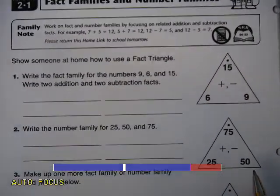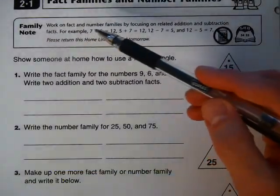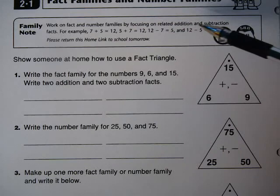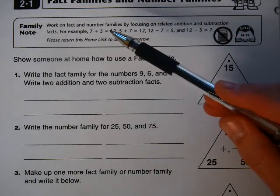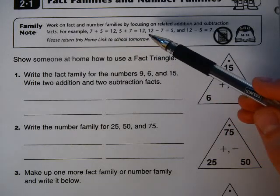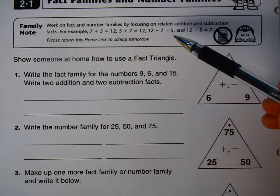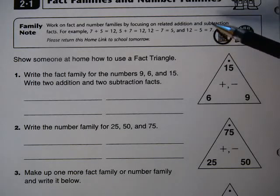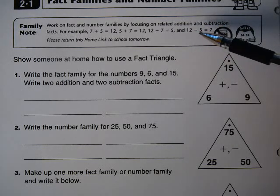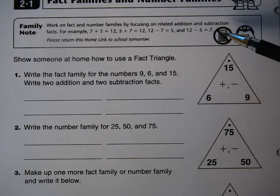The family note says work on fact and number families by focusing on related addition and subtraction facts. For example, 7 plus 5 equals 12, 5 plus 7 equals 12, 12 minus 7 equals 5, and 12 minus 5 equals 7. So basically, you're using the same numbers, but you're just doing a different operation, adding or subtracting, to get those numbers to work together and using that equals sign.